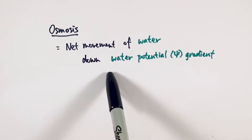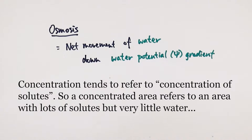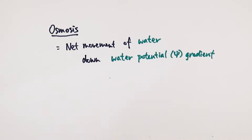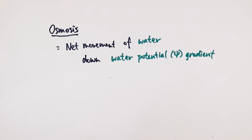The other difference is we don't call it concentration gradient, we call it the water potential gradient. This is one of the areas where people make lots of mistakes — saying osmosis is the net movement of water down the concentration gradient. An area with a high concentration would usually imply that it has very little water, because concentration tends to refer to the concentration of solutes, like particles, rather than water. So to avoid that confusion, especially at A-level, you must use the term water potential gradient rather than concentration gradient for osmosis.